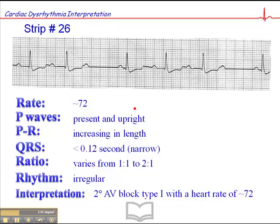The key here is to look for the dropped beat. Here's the P-wave that stands alone, and the PR interval before it is long, and the PR interval after it is short. That's the classic 2nd degree AV block type 1, or Wenckebach — dropped P-wave with a prolonged PR interval before it, and a shorter PR interval after it by comparison.